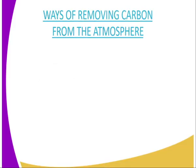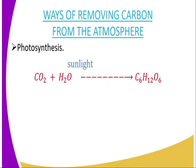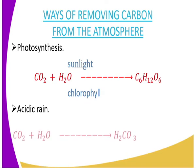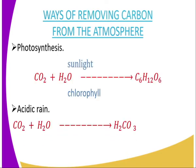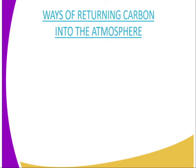We are going to look at ways of removing carbon from the atmosphere. The first one is through the process of photosynthesis, well illustrated by the equation shown. The third way is acidic rain — carbon combines with rainwater to form weak carbonic acid, which is the acidic rain.